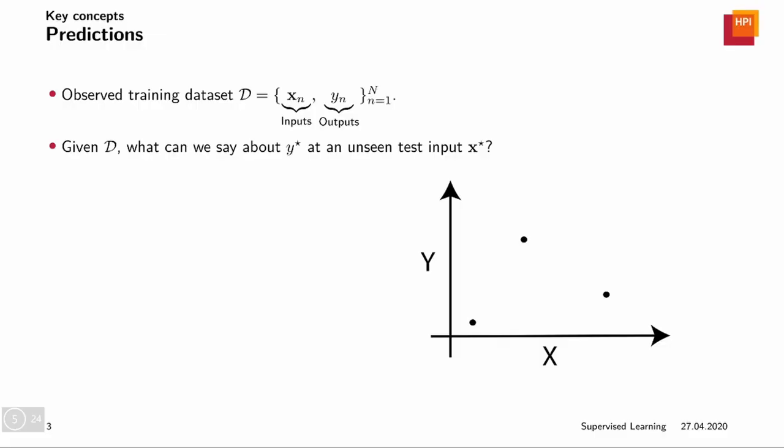So given this dataset in machine learning what we really want to do is we want to make a prediction. Say we're given a new data point x star and this x star lies here. The question is what can we say about the output value? We are only given an input. What is going on with the output?